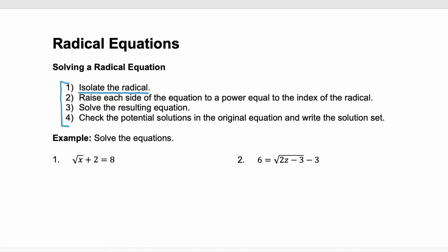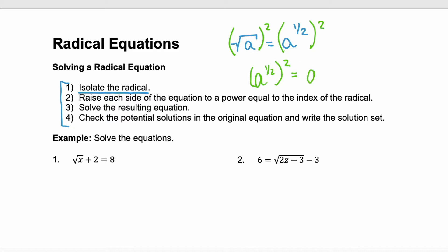The next step is to raise each side of the equation to a power equal to the index of the radical. That's because if you take the square root of a, that's the same as a to the power of one half. So if you square that radical, it's the same as squaring a to the power of one half. And a to the power of one half squared, you use the power property, and that's a to the power of one, or a. So the opposite operation for the square root is to square. The cube root is to cube, and so on.